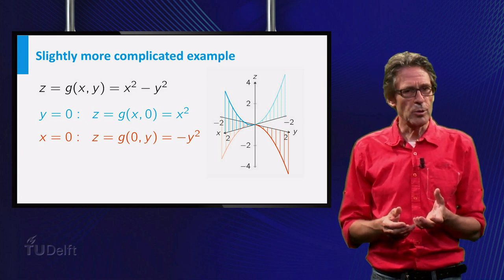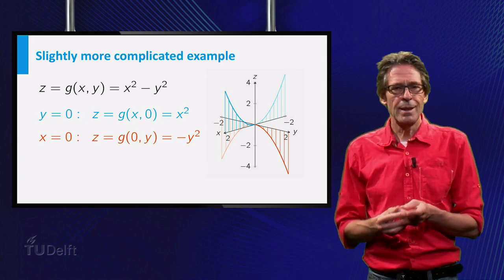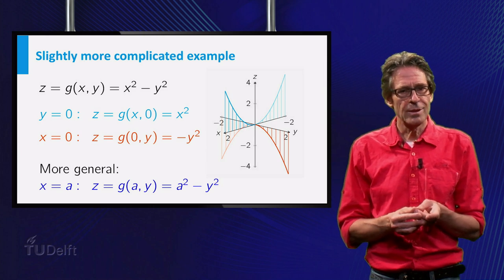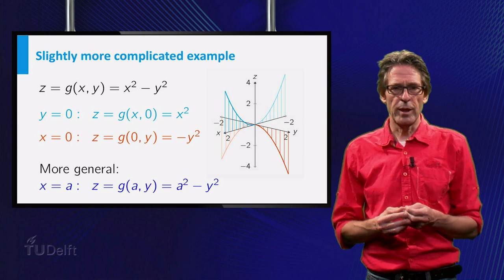I can describe the graph in words. If you keep x constant, x equal to a, then as a function of y we get g(a, y) equals a squared minus y squared.